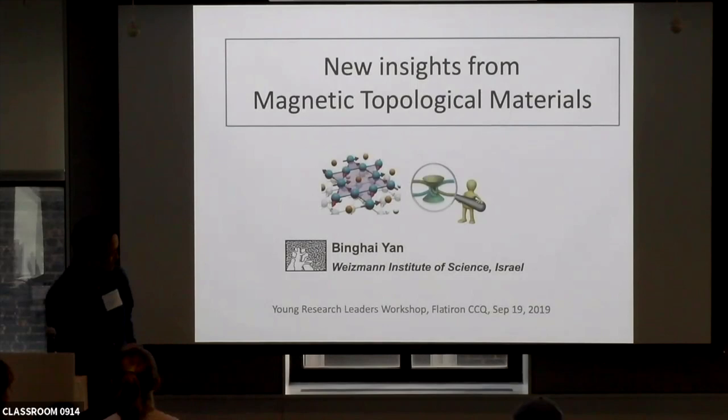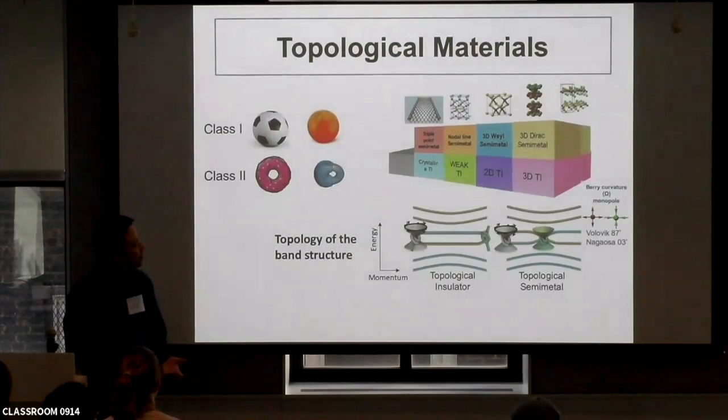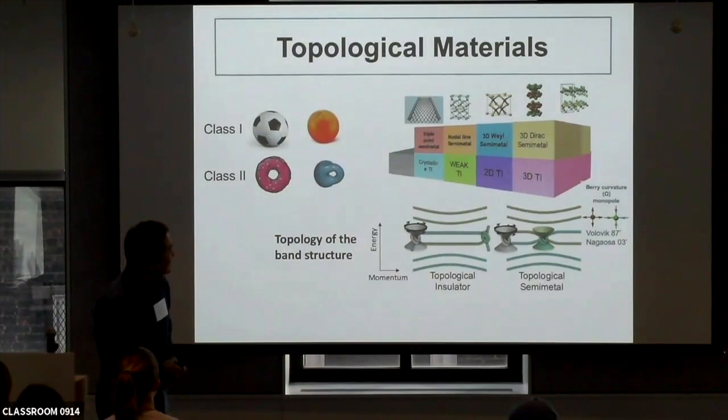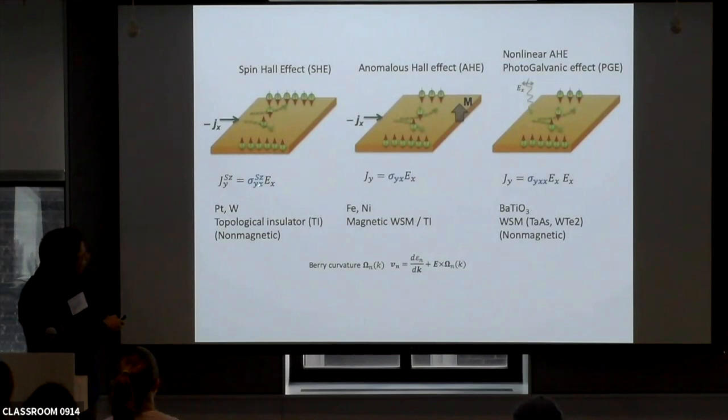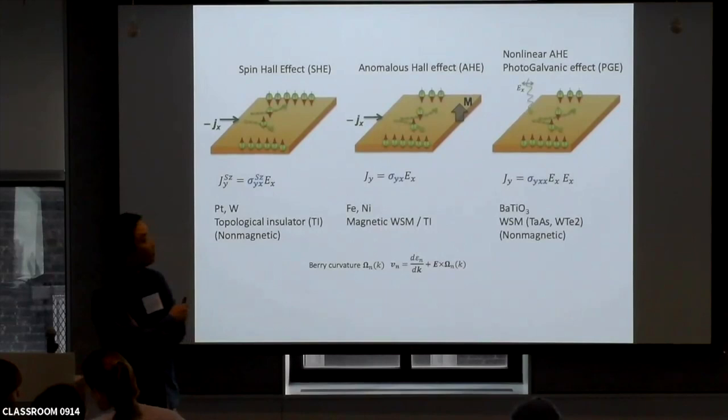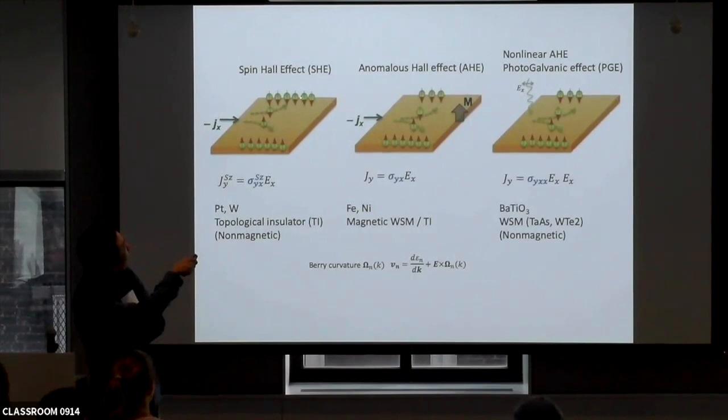As we learned from Maya's talk, topological phases are realized in many materials — there are already a lot of topological materials. In this talk, my interest is in this topological response. As Adolfo talked about linear and nonlinear response, here I will talk about, for example, if we have a current and we get spin accumulation, this is called the spin Hall effect.